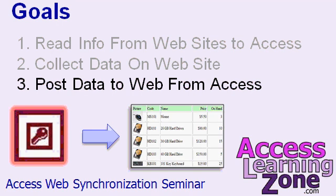Finally, we'll teach you how to post data from your local Access database up to the web. You can use this technique to update page information like sales bulletins or news. We'll also see how you can keep a local product database with product names, pricing, and quantity on hand, and then post that information up to your website. The benefit is that someone with absolutely no experience with Access or web design can automatically update your website with the click of one button.